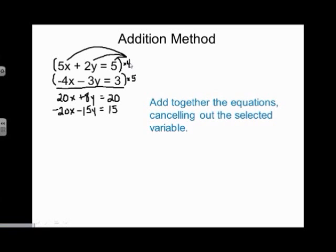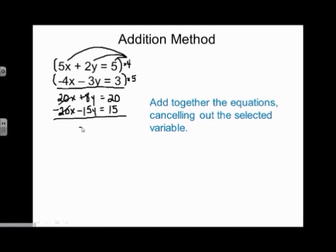My next step is to add the two equations together to cancel out x. 20x plus negative 20x equals 0 — they cancel out. 8y minus 15y gives negative 7y. And 20 plus 15 gives 35. So we have negative 7y equals 35.